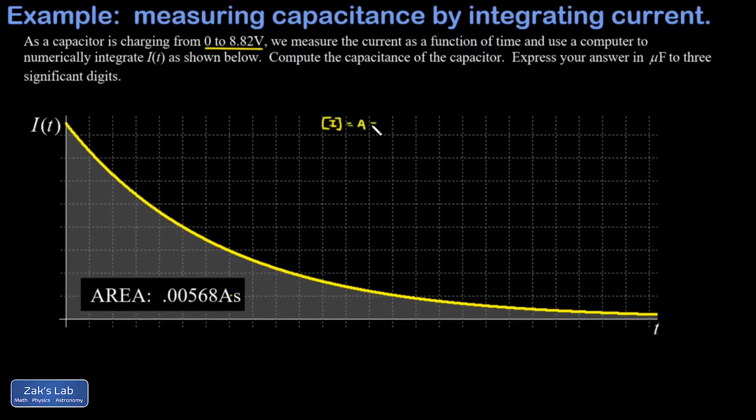The units of current are amps, but an amp is a coulomb per second. If I multiply both sides by seconds, I see immediately that an amp second is a coulomb. So this is just a funny way of saying coulombs.